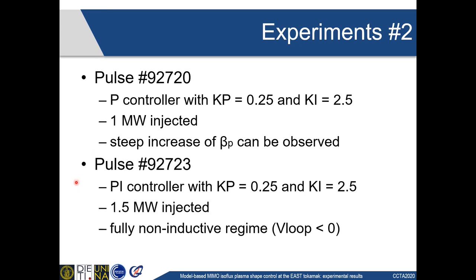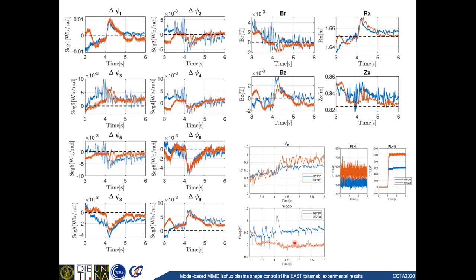To be more precise, the disturbance that enters the system, as we've seen before, is related to the time derivative of beta-P, and thus we can observe a significant bump on the controlled quantities, which is quite well recovered by the controller in about one second. Moreover, the level of lower hybrid power injected in the plasma during the second of these pulses was enough to achieve the desired fully non-inductive regime, and indeed we can observe a negative value of the loop voltage, which means that all of the current is driven by means of external current sources, which is something that we actually want to achieve for long pulse operation of the machine.